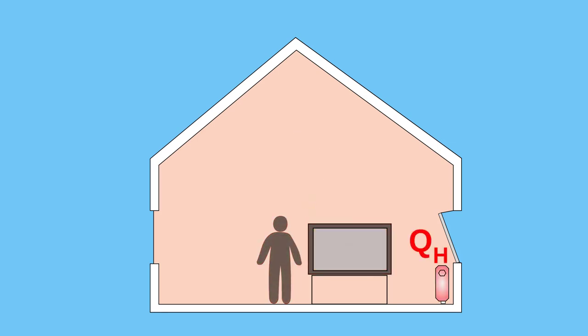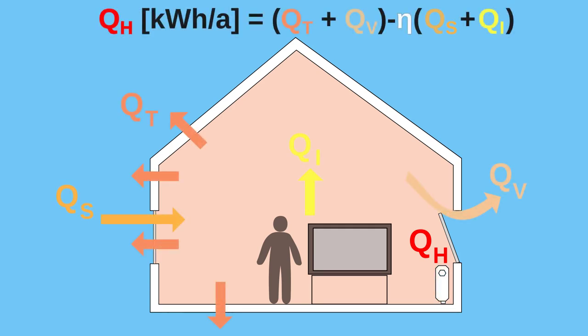We can calculate how these heat gains are offsetting the transmission and ventilation heat loss. When this calculation leaves losses that cannot be offset by gains, we have a heating requirement and we need to add heat to our system.